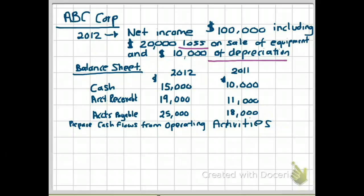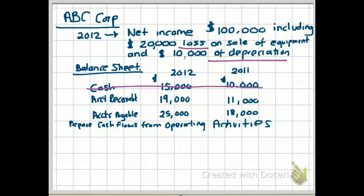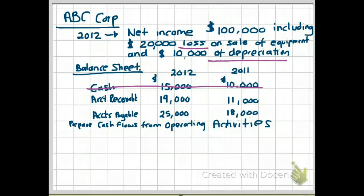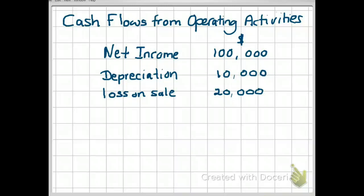The next step is to go to your comparative balance sheets. You are going to ignore cash, so we'll draw a line through cash. The next item is accounts receivable, a current asset. We need to figure out what happened — did it increase or decrease? In 2011 it was $11,000, and in 2012 it went up to $19,000, an increase of $8,000. Current assets have an inverse relationship to cash flows, so we subtract that $8,000 in the cash flow statement.